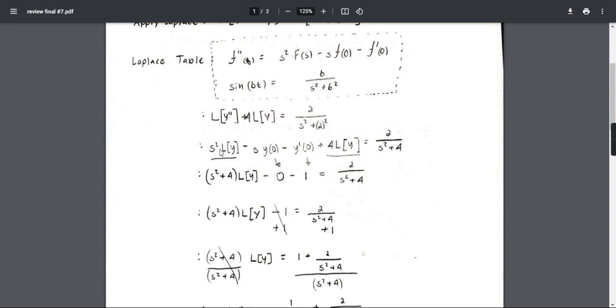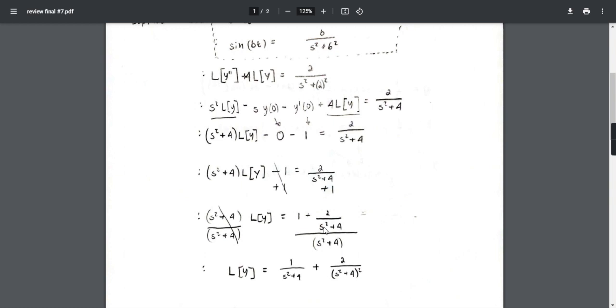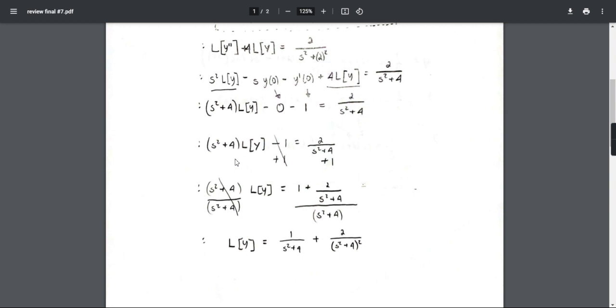Multiply by Laplace y minus 1, and it'll look like this. Add 1 to both sides, it should look like this. Now we're going to divide by s squared plus 4 to both sides, and it's going to look something like that.